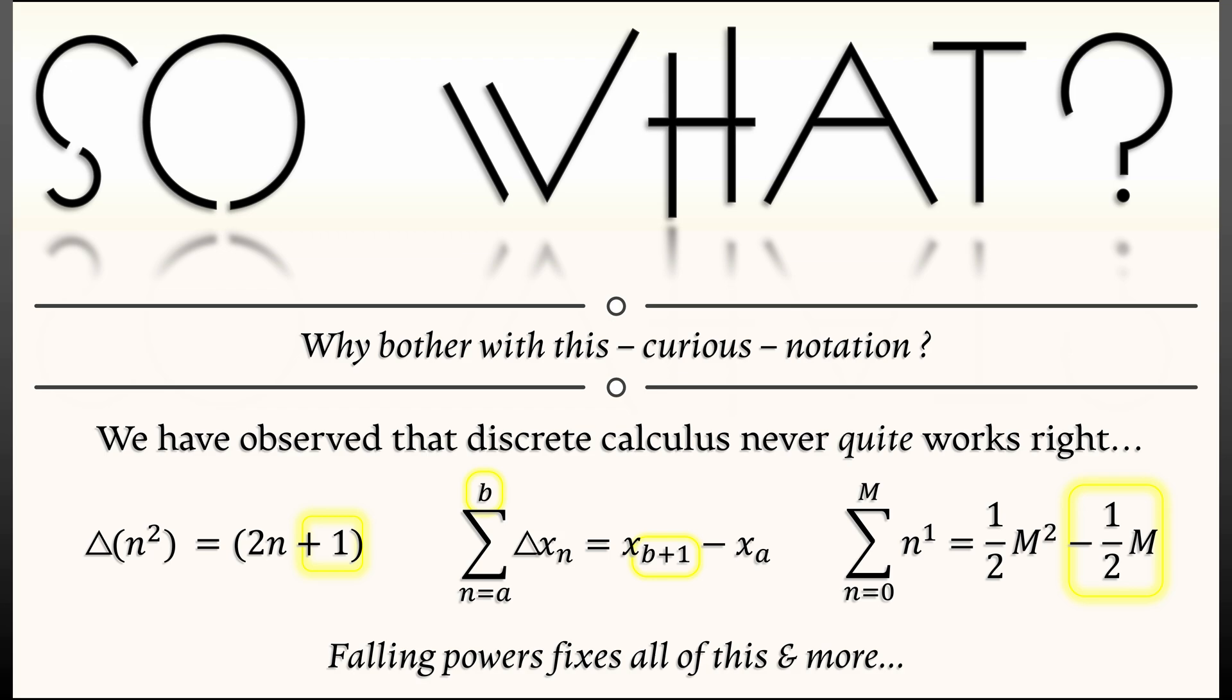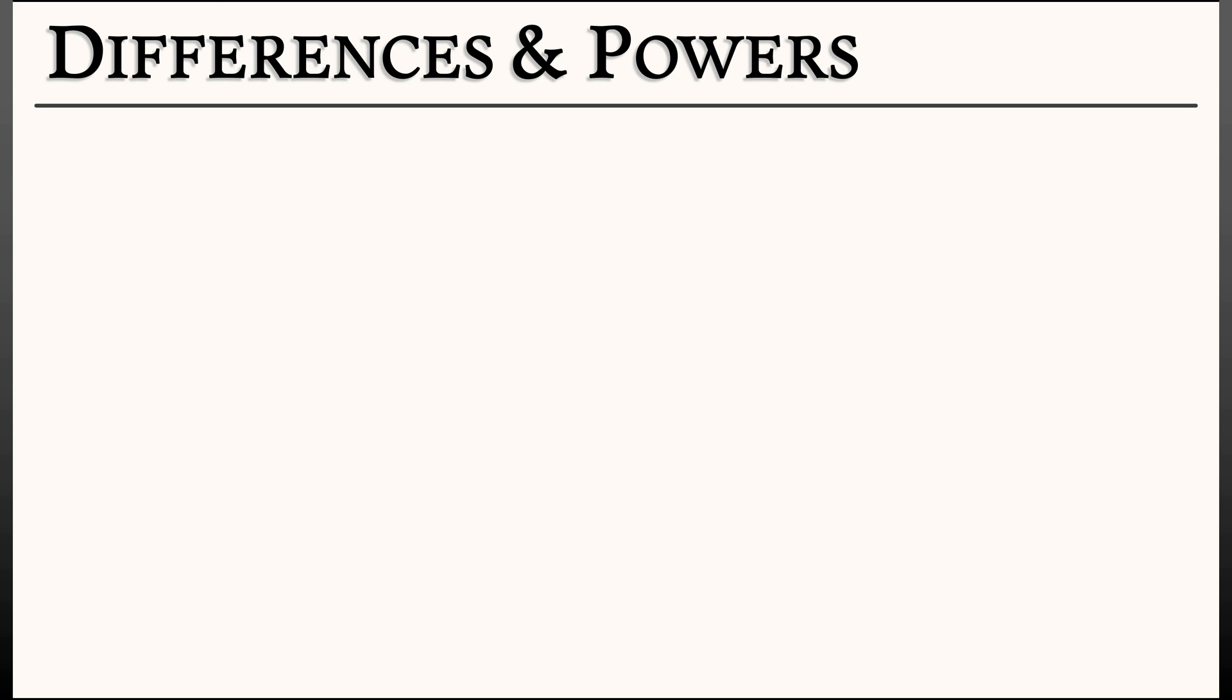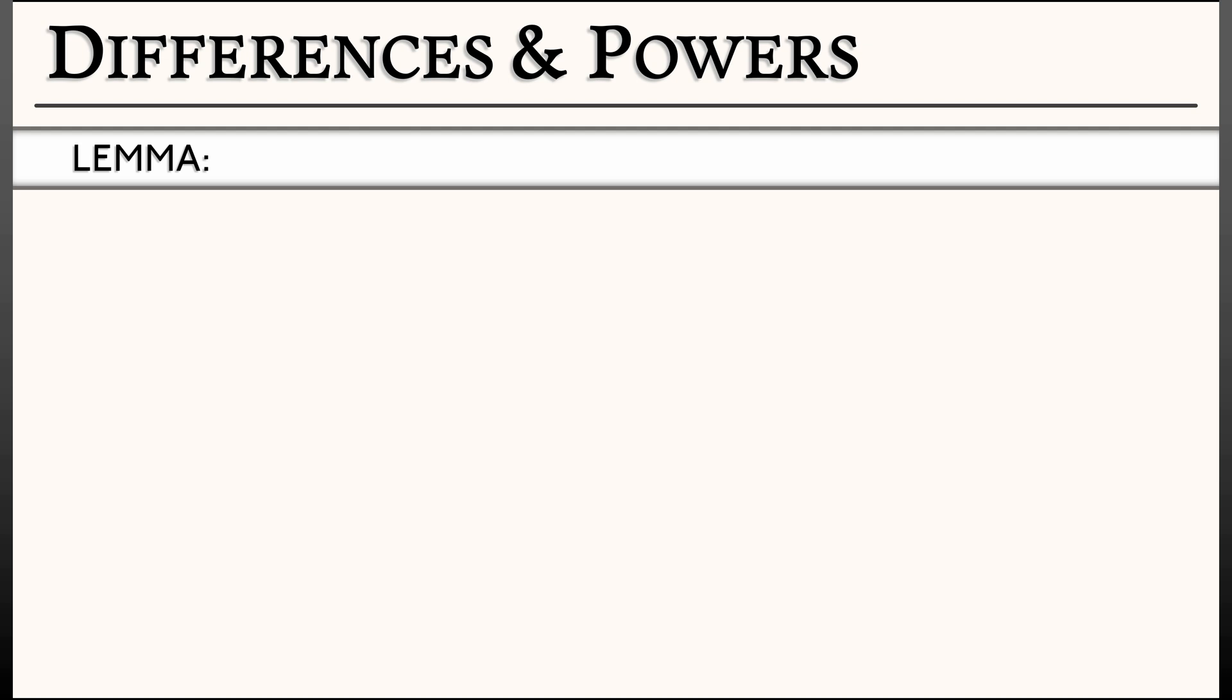We're not going to go too far down this road, but let's do one fairly straightforward lemma to see how nice things work with falling powers. Here's the result. The forward difference of n to the falling k is what you think it should be. It's k times n to the falling k minus 1.